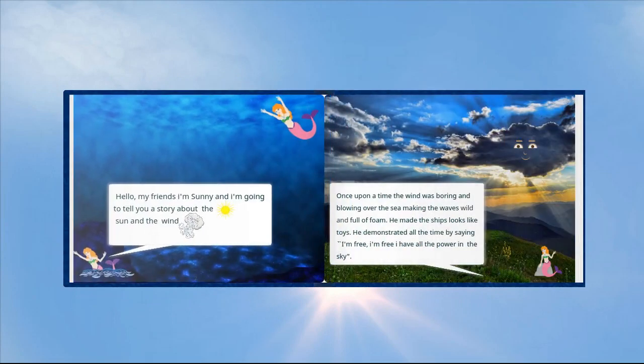Once upon a time, the wind was blowing and blowing over the sea making the waves bright and full of hope. He made the seeds look like toys. He demonstrated all the time by saying, I'm free, I'm free, I have all the power in the sky.